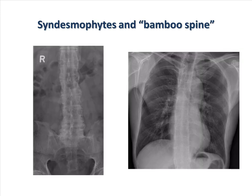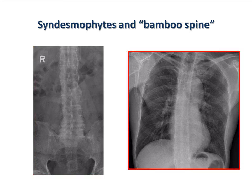Patients with ankylosing spondylitis can have syndesmophytes or a bamboo spine, illustrated by the lumbar x-ray on the left as well as the chest x-ray on the right.